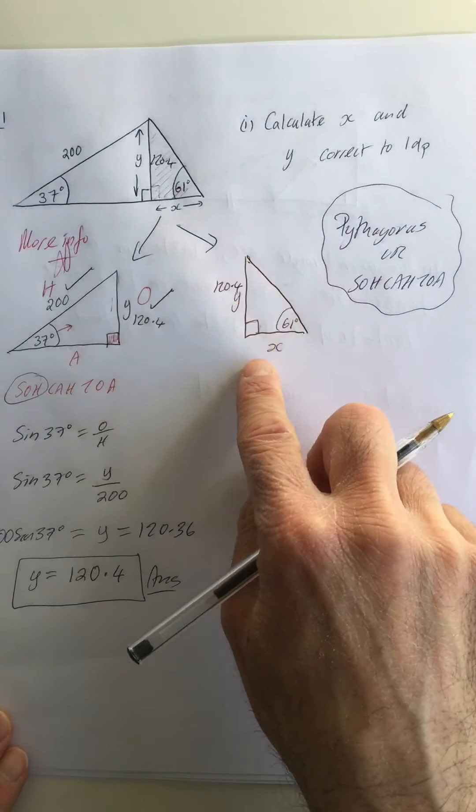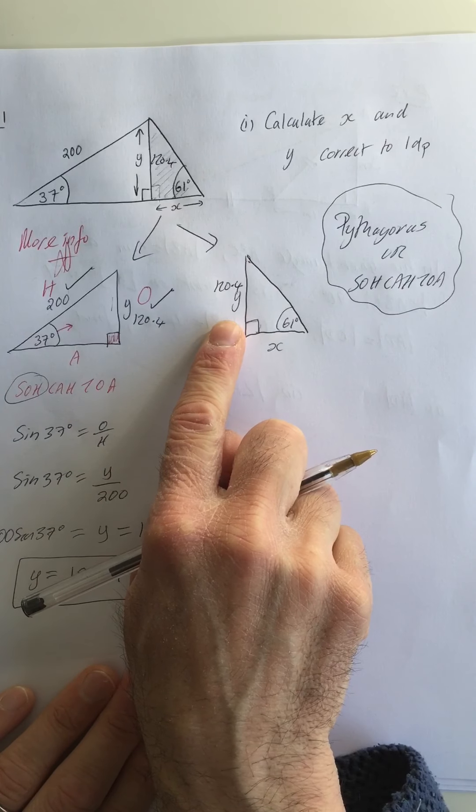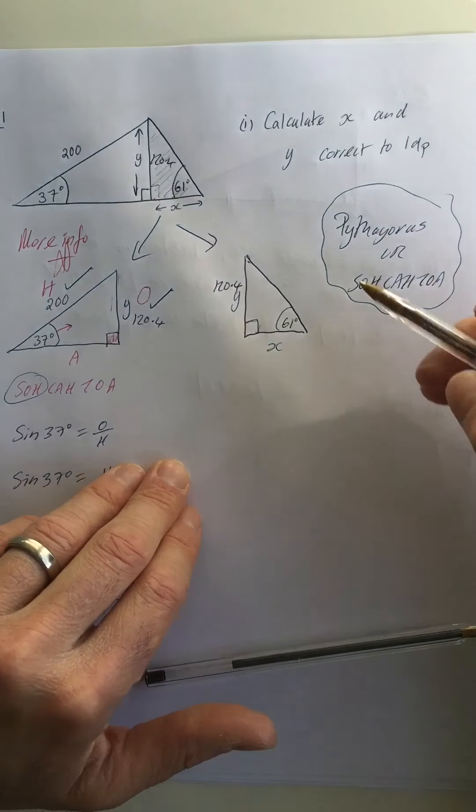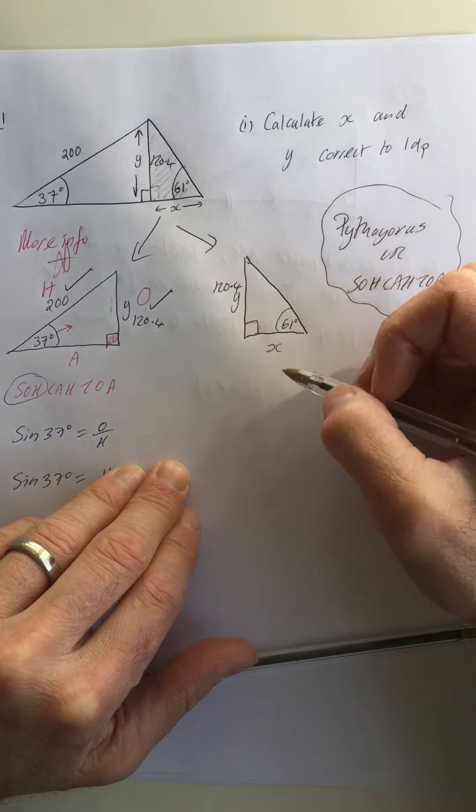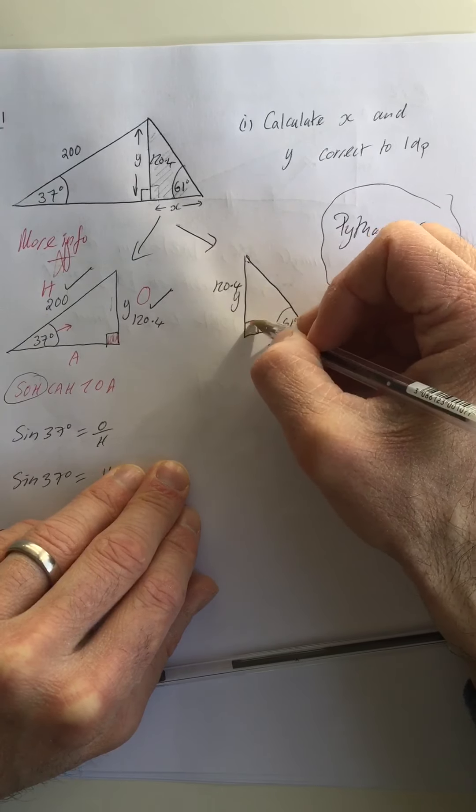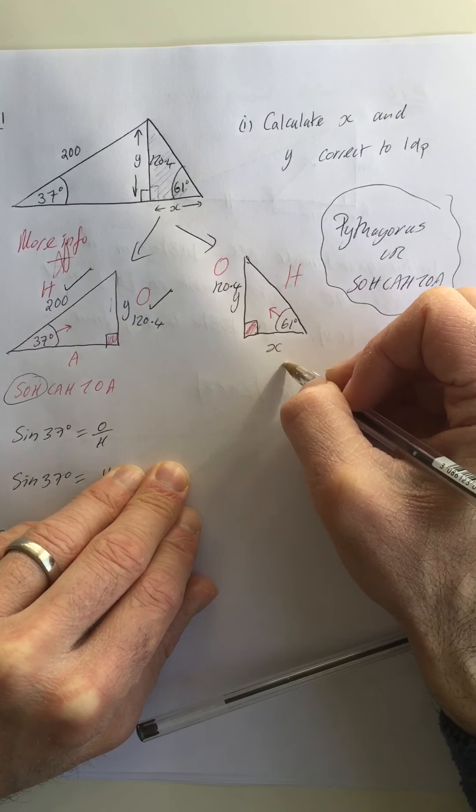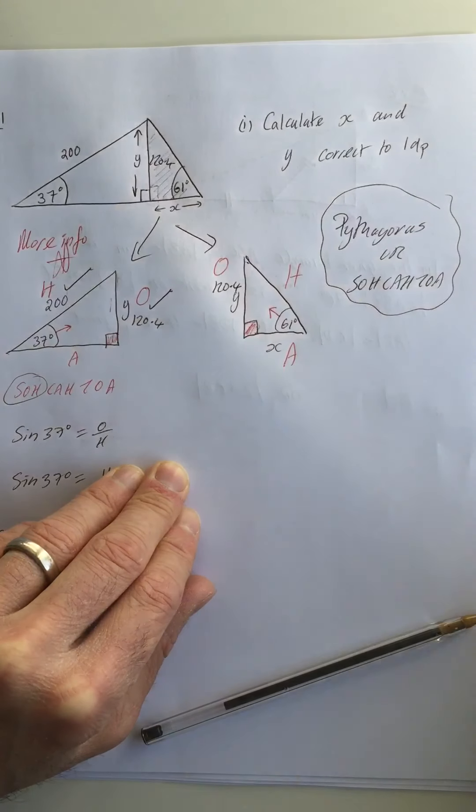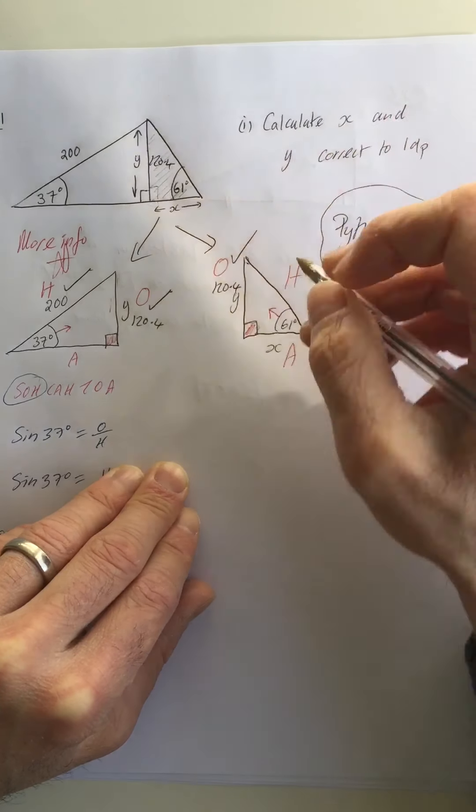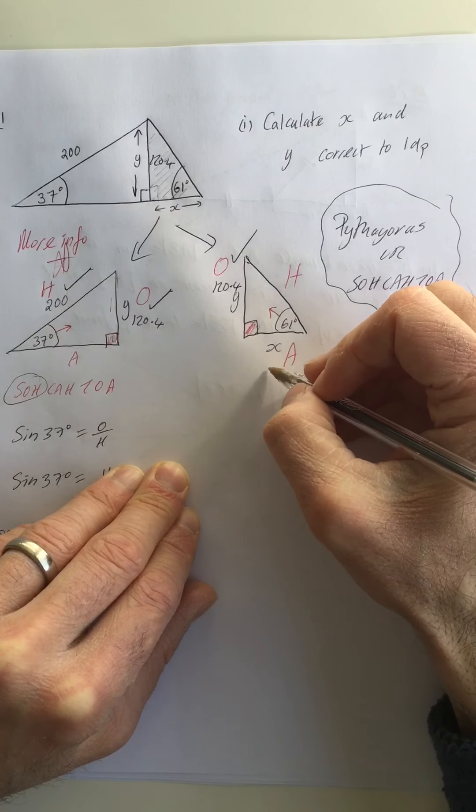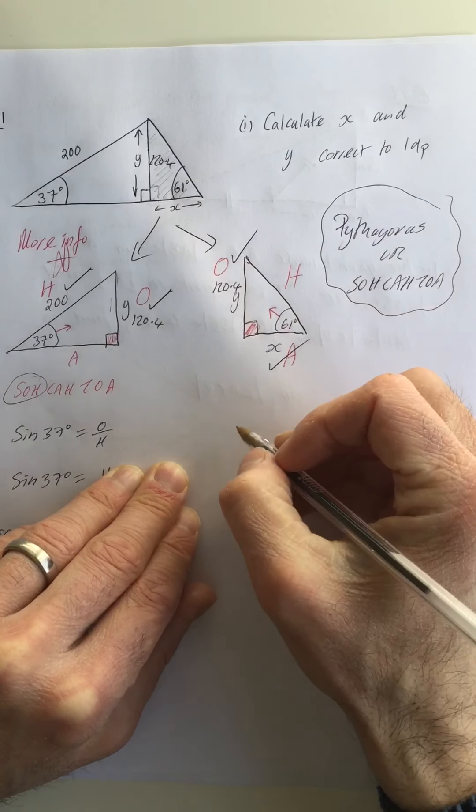Now I turn my attention to the other triangle, and you'll notice that now I have more information because I know what y is. I still cannot use Pythagoras's theorem on this because I only know one of the sides. So I'm going to label my triangle. If this is my right angle, this is H. There's 61, so this is O, and this here is A. I'm going to tick the one that I know: I know what O is, it's 120.4. I want to know what x is. So which one of SOHCAHTOA has O and A in it? And the answer is tan.